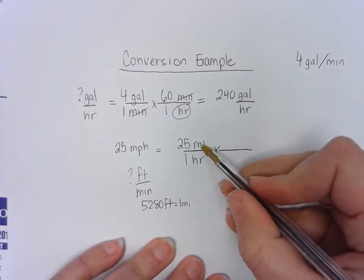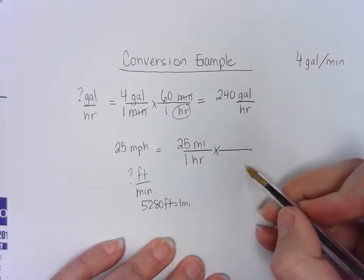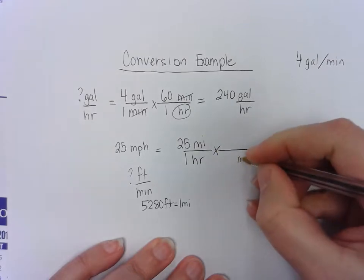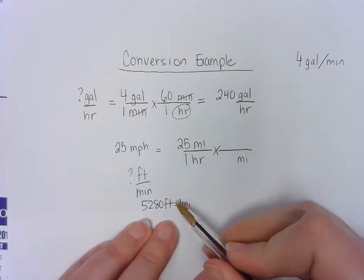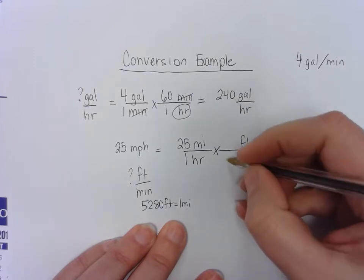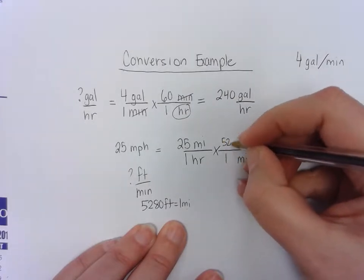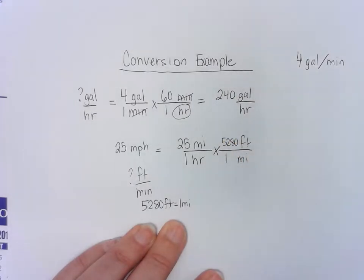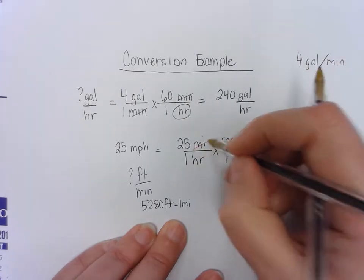So I have miles here on the top. My miles is going to go on the bottom of a fraction so that I can cancel it. I can relate miles to feet. So I'll put feet on the top. I know that one mile is 5,280 feet. And my miles have now canceled.